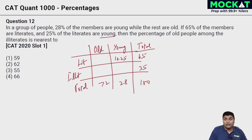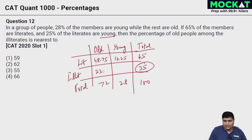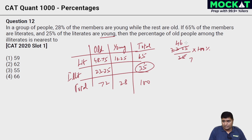We get 16.25 young literates and 48.75 old literates. The percentage of old people among the illiterates of 35: old total is 72, old literates is 48.75, so old illiterates = 72 − 48.75 = 23.25. Percentage is 23.25/35 × 100. Dividing by 5 gives 4.65/7, and working through that gives approximately 66.3%. Option 4 is the closest.